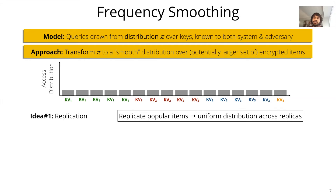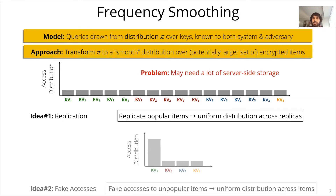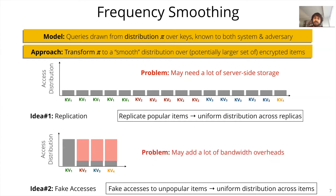However, as you can see, this approach can require creating a lot of replicas, which can lead to high storage overheads. The other approach is to add fake accesses to unpopular key-value pairs. Again, this would make the access distribution appear uniform to any external observer. Unfortunately, adding fake accesses can add a lot of bandwidth overheads, as shown by the red bars.